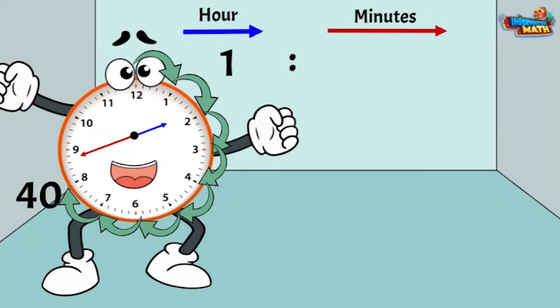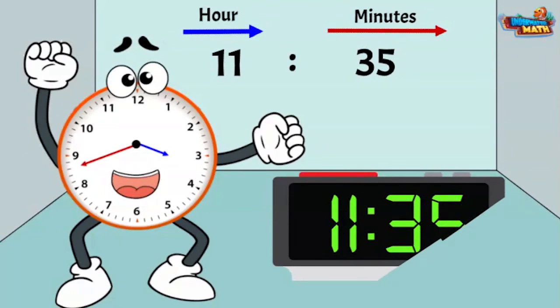I am called an analog clock, but my cousin is called a digital clock. Digital clocks show the time with the hours then the minutes. This digital clock shows 11:35.